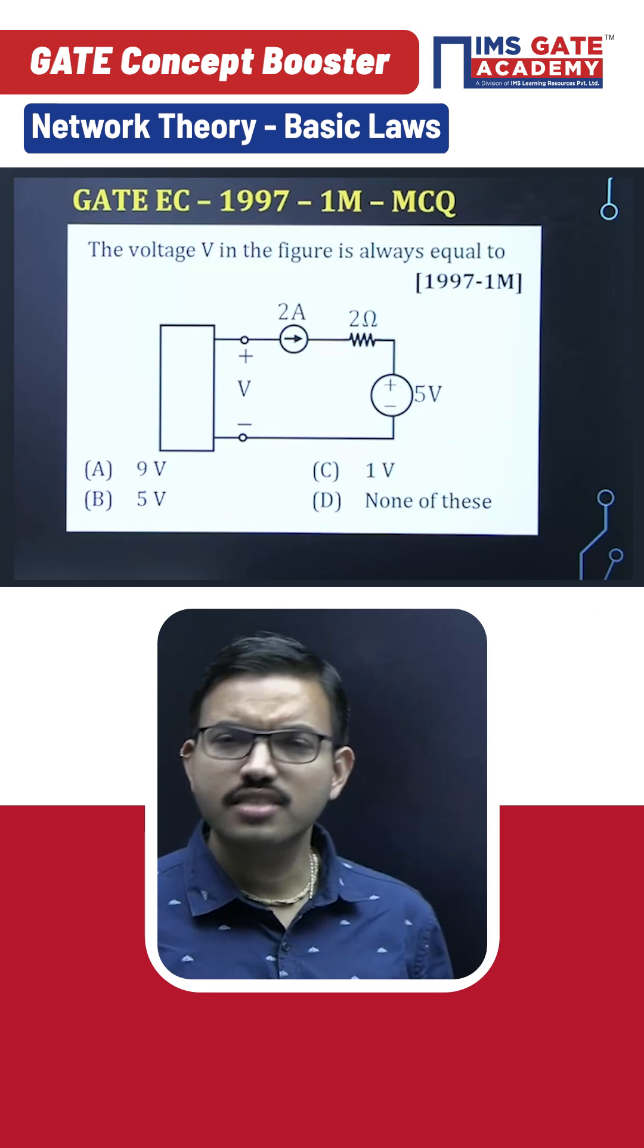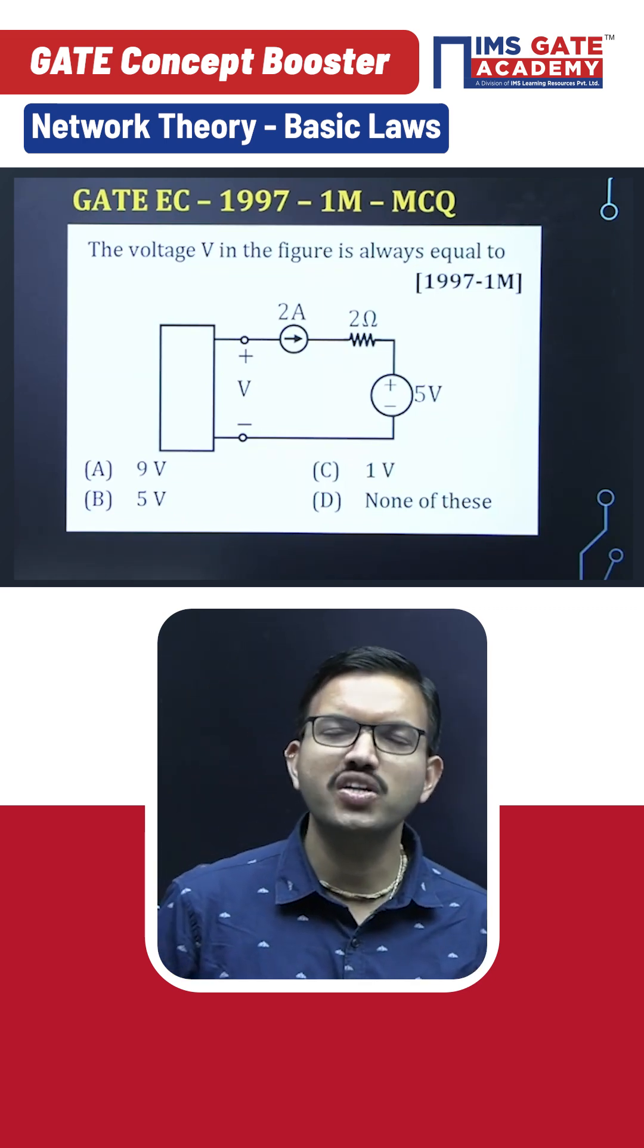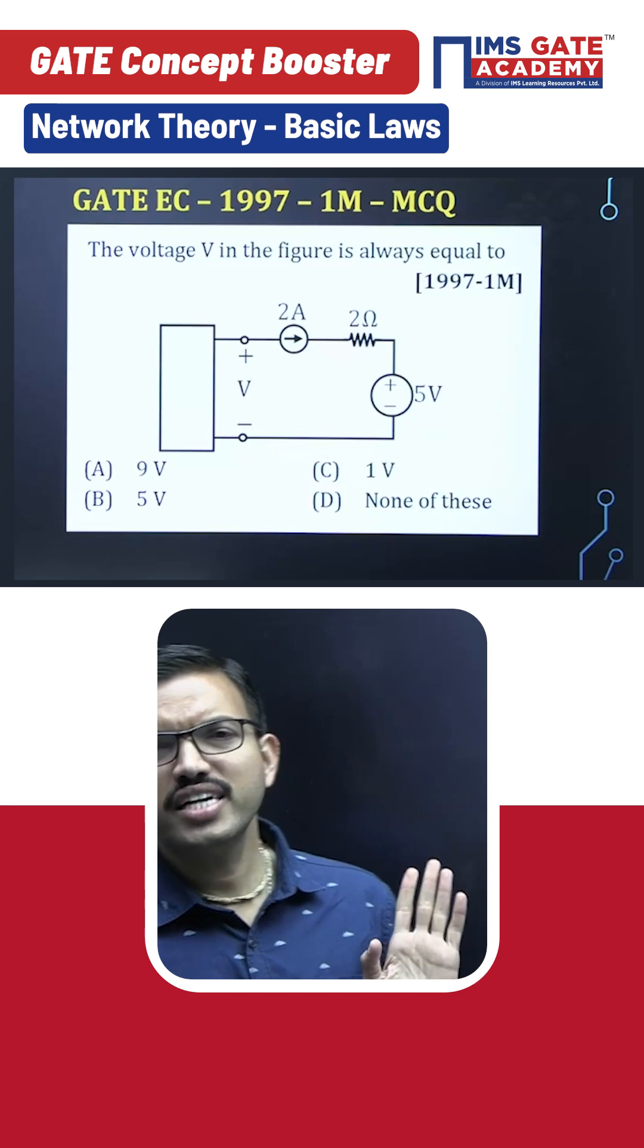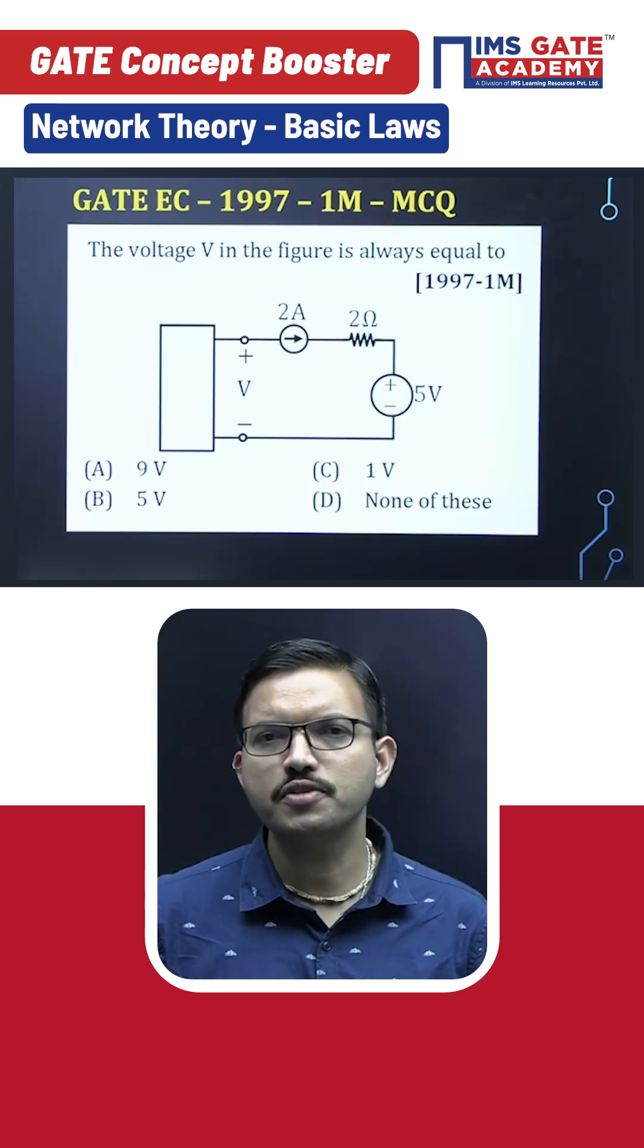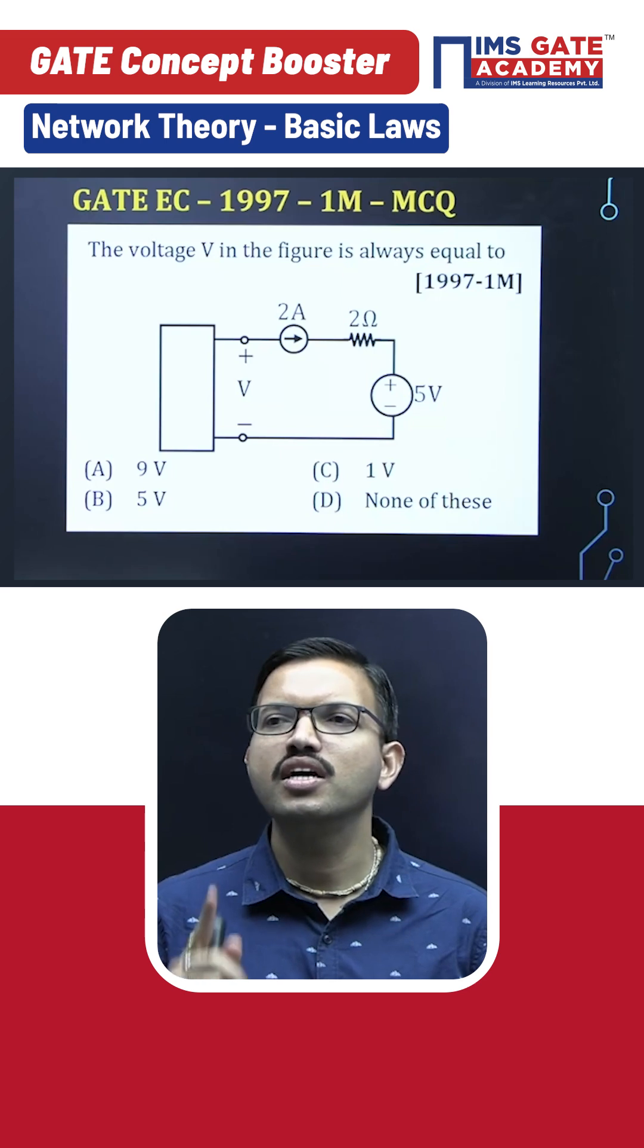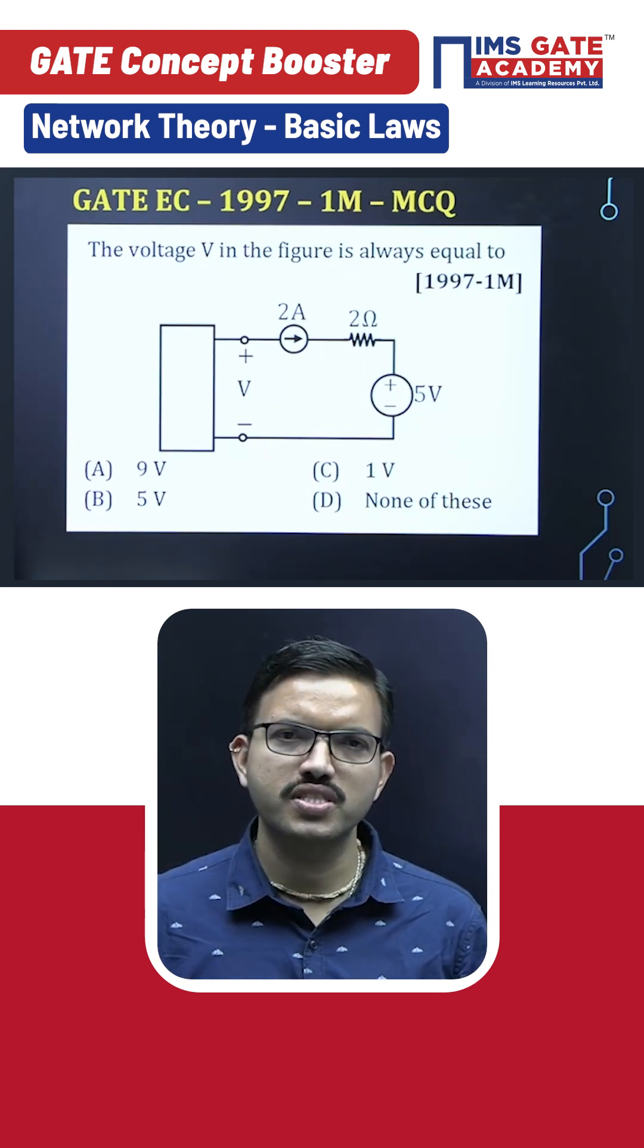In this question, you have to find out the voltage across two terminals. On the left-hand side, there's a rectangular box with unknown elements. On the right-hand side, you have a two-ampere source, a two-ohm resistor, and a five-volt source.